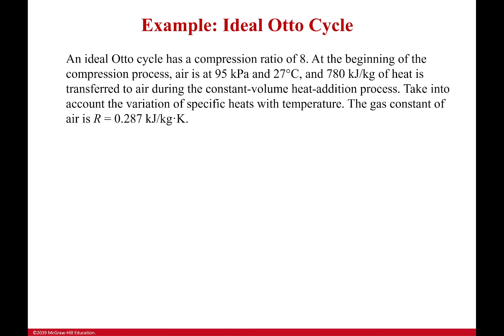Okay, so we have an ideal Otto cycle, and it has a compression ratio of 8. At the beginning of the compression process, air is at 95 kilopascals and 27 degrees Celsius. Note, that's not chosen at random, that makes it a nice round number of 300 Kelvin, which is why they do that. And 780 kilojoules per kilogram of heat is transferred to air during the constant volume heat addition process. Take into account the variation of specific heats with temperature. And the gas constant of air is this value right here.